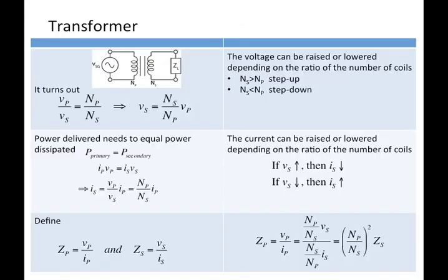The ratio of the voltages across each element of the transformer — the primary voltage compared to the secondary voltage — is related to the ratio of the number of turns. For example, you can make the primary have 100 turns and the secondary have 10 turns, or the other way around: the primary with 10 turns and the secondary with 100 turns. The voltage across the secondary is related to the voltage across the primary by the ratio of the number of turns.